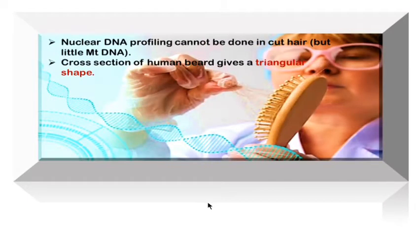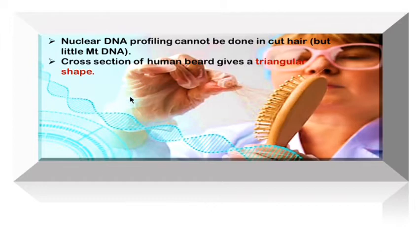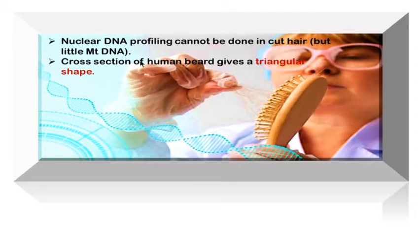If the hair is cut, the cut hair doesn't contain any follicle. In the follicle we have the nucleus, and from there we get DNA. But if the hair is cut, we won't get any nuclear DNA profile. However, we can get a little amount of mitochondrial DNA because this DNA is present in the shaft of the hair.